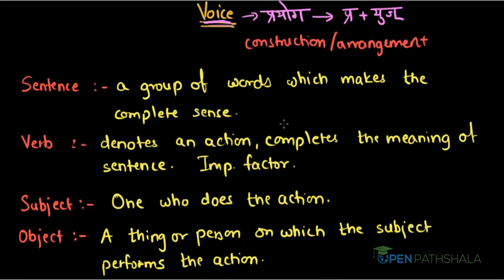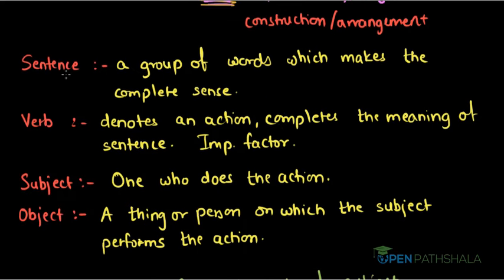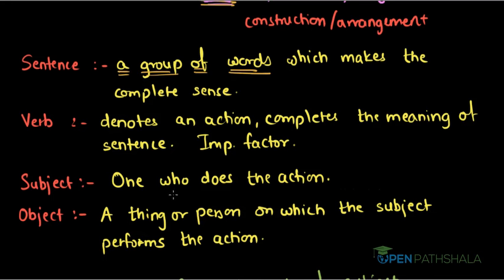Now let us revise some terms before moving to voice. What is a sentence? A sentence is a group of words which makes complete sense and conveys some meaning. What is a verb? A verb is that word which denotes an action and completes the meaning of a sentence. It is a very important factor of the sentence because without a verb, a sentence cannot be complete. What is a subject? A subject is one who does the action denoted by the verb — the doer of that action. An object is a thing or person on which the subject performs the action.